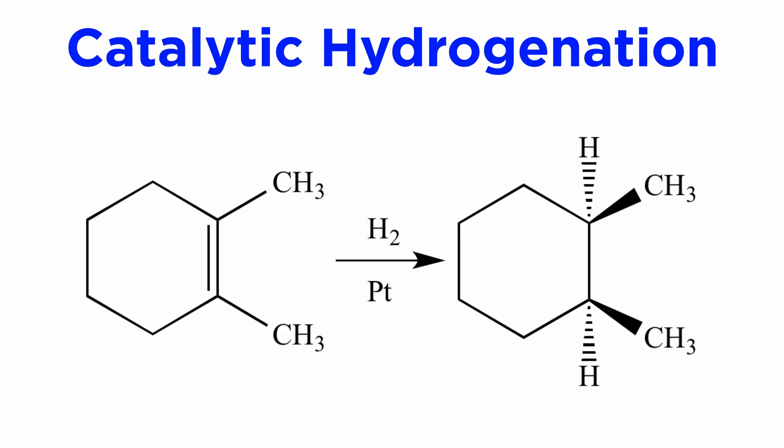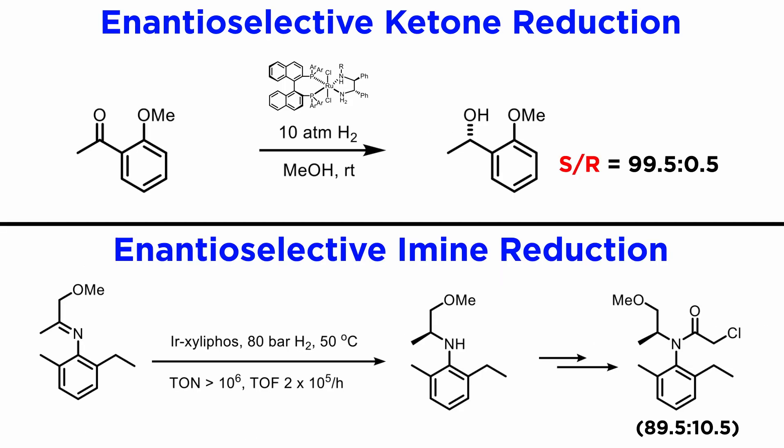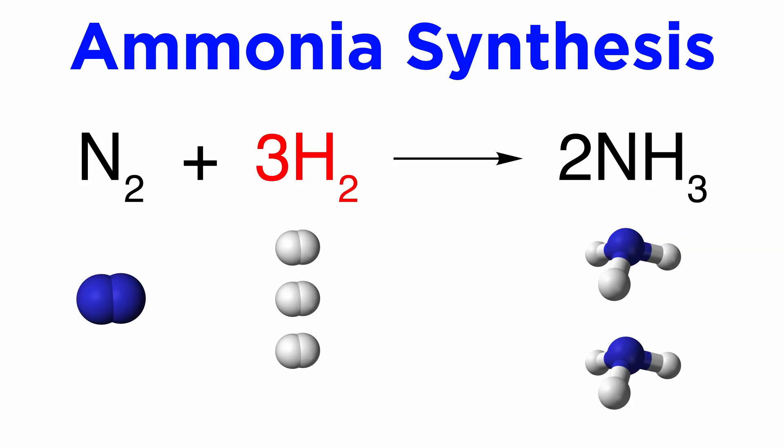Over the past few tutorials, we have been discussing catalytic hydrogenation reactions, meaning the addition of hydrogen gas to a number of double bonds, chiefly carbon-carbon, but also carbon-nitrogen and carbon-oxygen. Now we will discuss another important application of hydrogen gas: its reaction with nitrogen gas to produce ammonia.